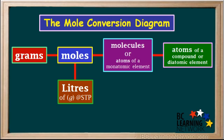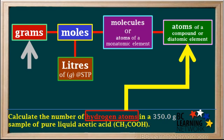We can use a diagram like this for most simple mole conversion problems. It shows how to find a pathway from one quantity to another. We're given the grams of acetic acid, and we're asked to find the number of hydrogen atoms in the given mass.